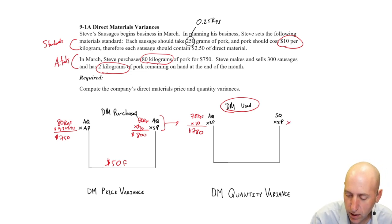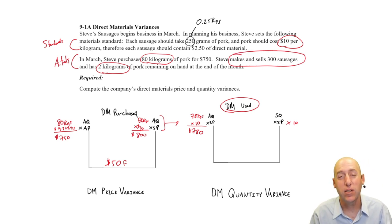SQ times SP. Well, our standard price remains 10. SQ, we answer that question. And I went over this in the previous video, but let's reiterate what the question is. Given the actual level of output, given the actual number of good units produced, in this case Steve makes and sells 300 sausages. So given that he made 300 sausages, how much material would we expect to use? And the answer is 300 sausages times 250 grams of pork, which is 0.25 kilograms.